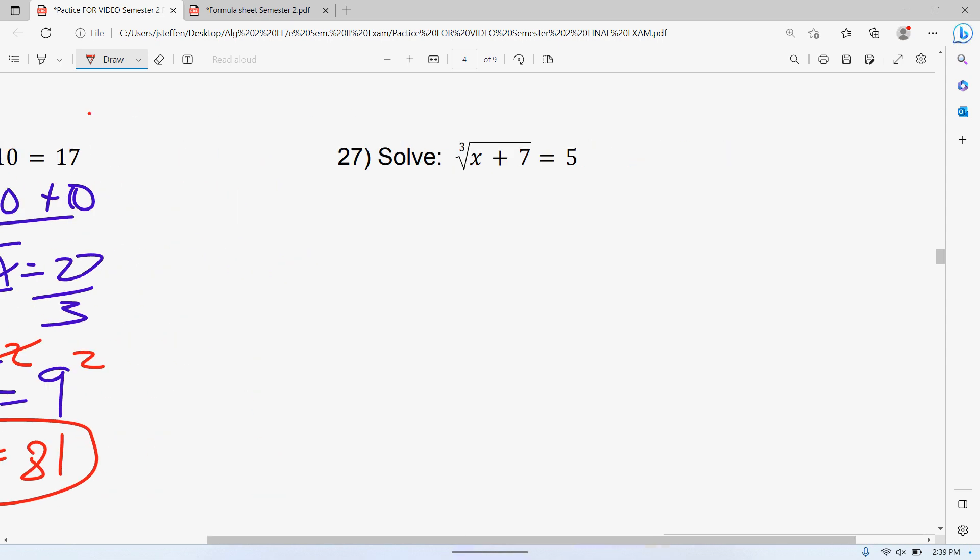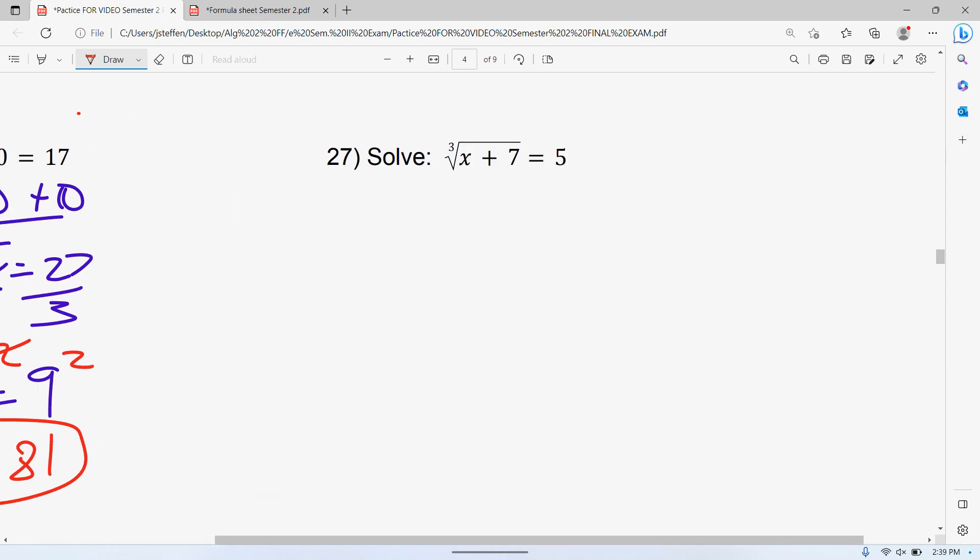27, the first thing to get rid of the radical is raise to the different power. So instead of index number is 3. x plus 7 to the third power, you can use your exponent sheet or if you're familiar, it's 125 plus 7. Then subtract 7, x equals 118.